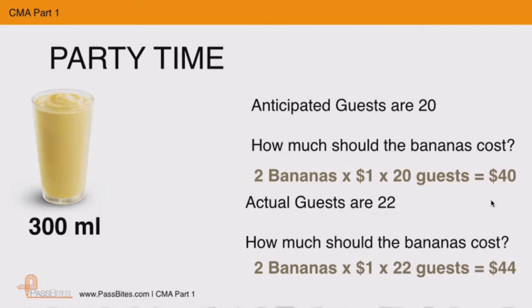This is an example of a flexible budget — changing the budgeted amount from 20 guests to the actual 22 guests. This helps us find the flexible budget figure.